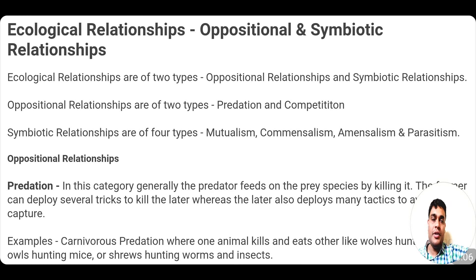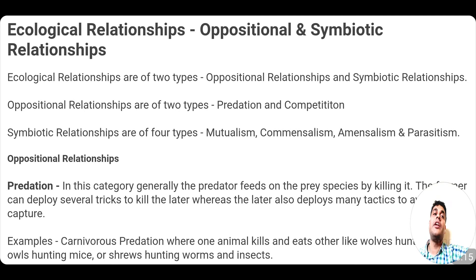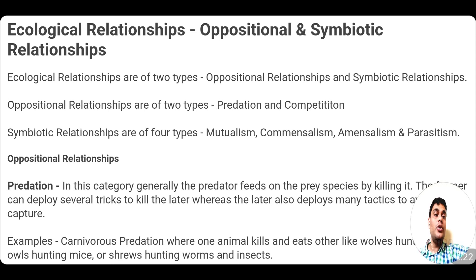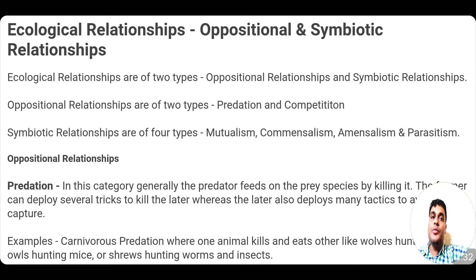When we talk about ecological relationships, it is divided into two broad heads. First is oppositional relationship and the second is symbiotic relationship. Under oppositional relationship, there are two sub-types: predation and competition. Under symbiotic relationship, it is of four types: mutualism, commensalism, amensalism, and parasitism.